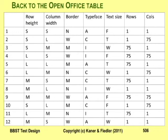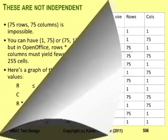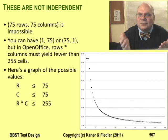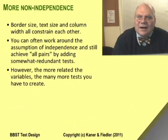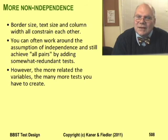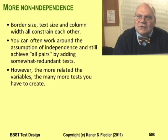My last example of all pairs test design considered tables in OpenOffice Impress. Here's a reminder of the combination chart. The problem is that these variables aren't independent — OpenOffice restricts the number of cells in a slide table to 255, so you can't have a table with 75 rows and 75 columns. I chose the other variables for the OpenOffice tests because they look like they might be interesting to test together, but these all constrain each other. You can't test them all together at all of their boundaries at the same time. You can replace values in the all pairs table with less extreme combinations that are valid, but every replacement involves a judgment call and probably turns into several tests replacing one.